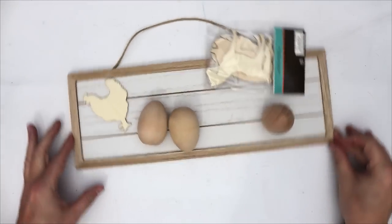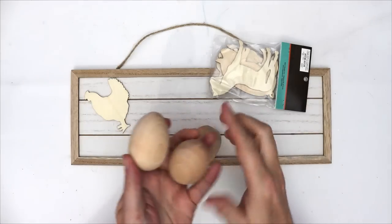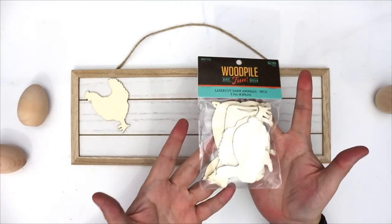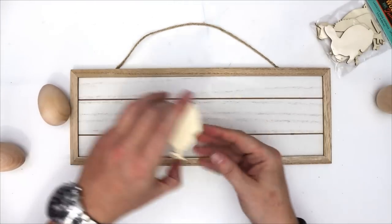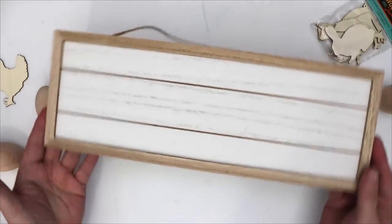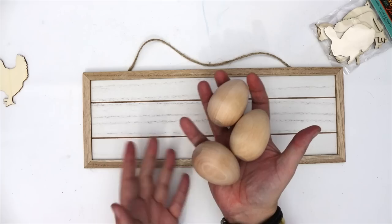And for my first project, we are going to take this Dollar Tree blank. I have these wood eggs that I picked up from Hobby Lobby and I have these animals. These packets come with a bunch of different animals and I'm going to be using this chicken. And of course, these blanks. These are brand new blanks. I love these blanks from Dollar Tree so much.